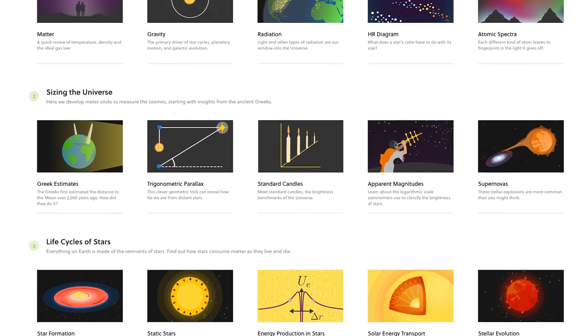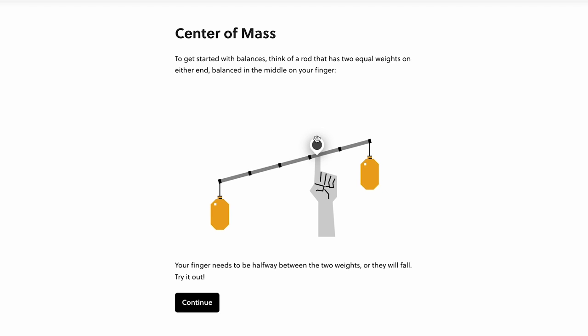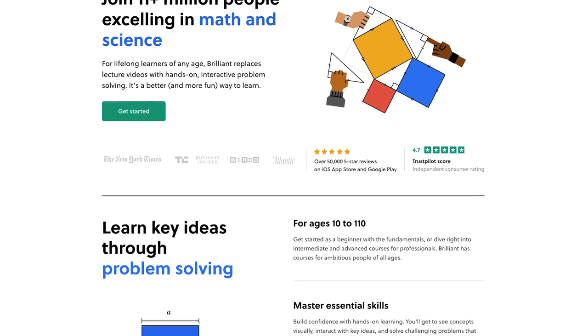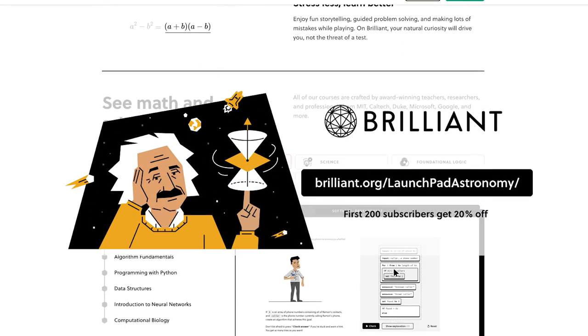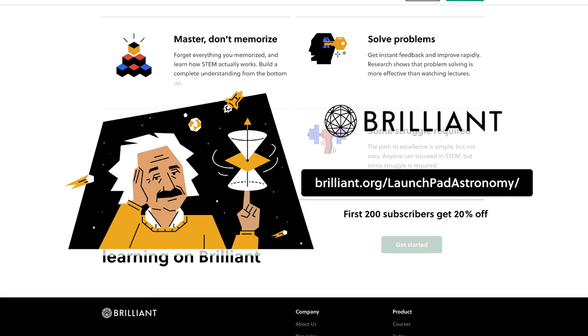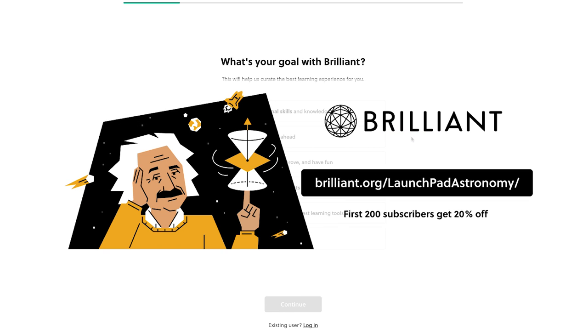Interactive learning is the best way to not just understand ideas, but to just really play around with them and understand them at a deeper level. Brilliant's strength is its incredible versatility. You can learn at your own pace, whether it's doing a bunch of lessons all at once, or doing a little here and there in between breaks at work or while traveling. To get started for free, you can now visit brilliant.org/launchpad astronomy, or click the link in the description of this video. The first 200 visitors to this link will get 20% off Brilliant's annual premium subscription.